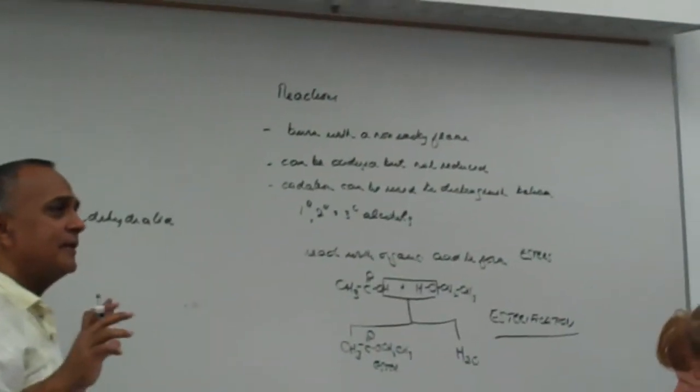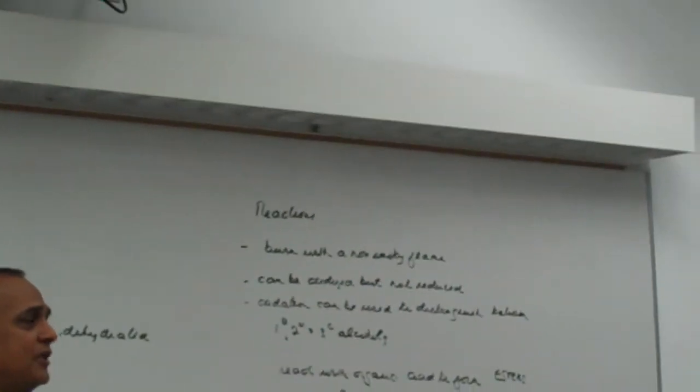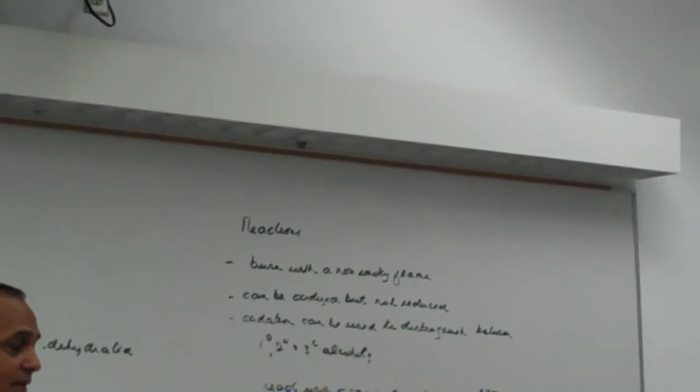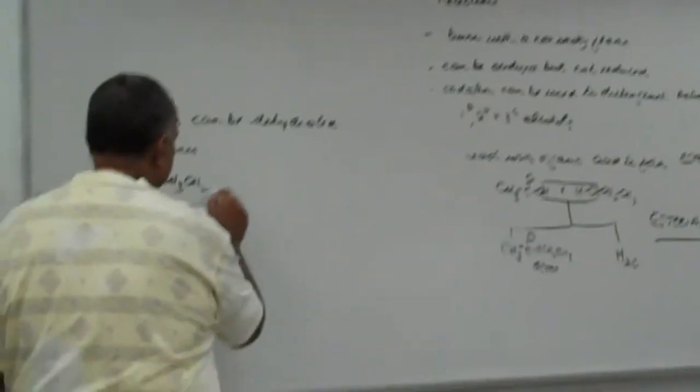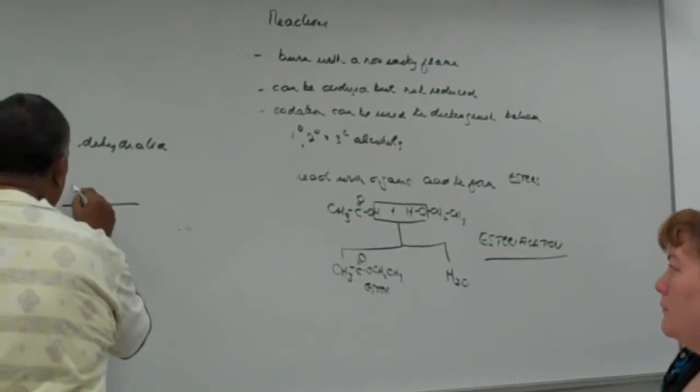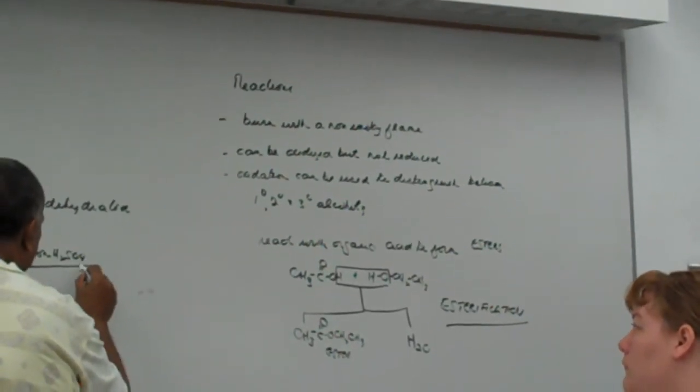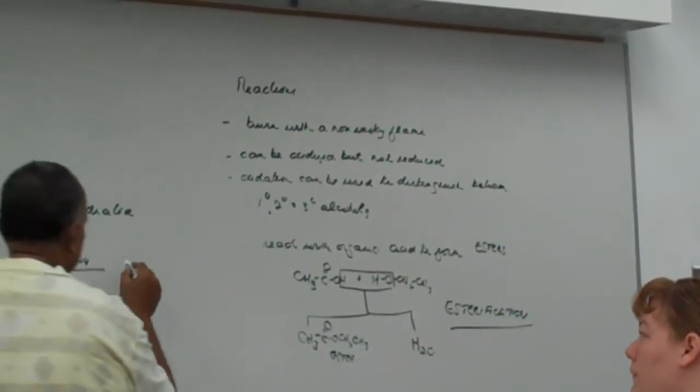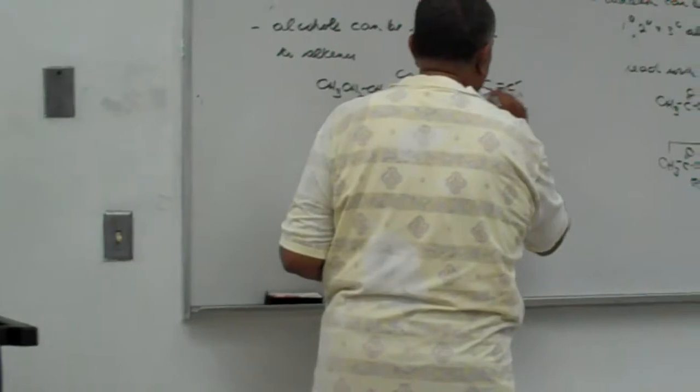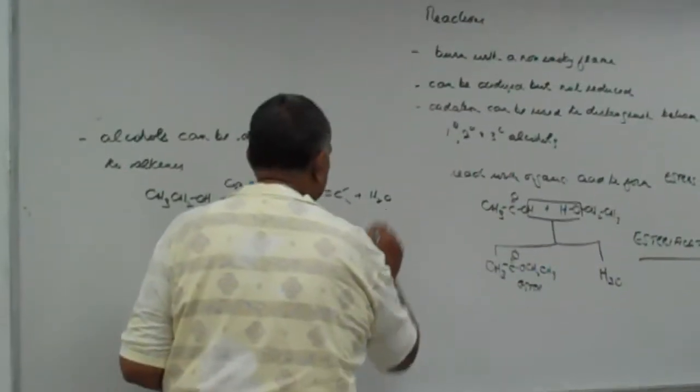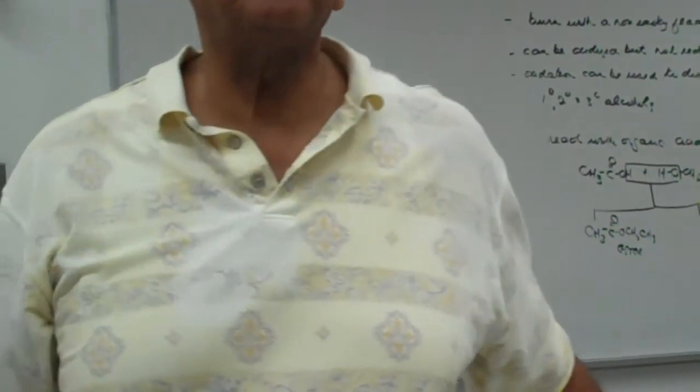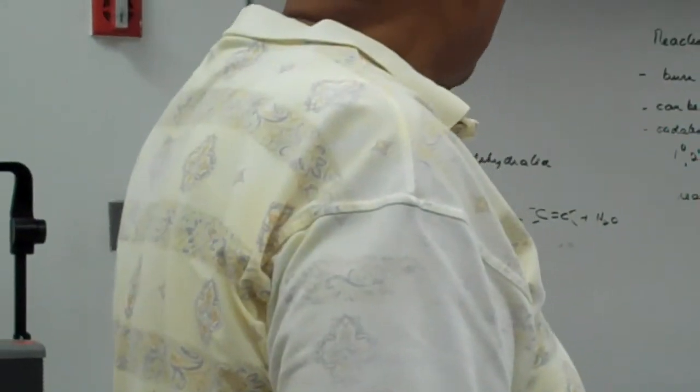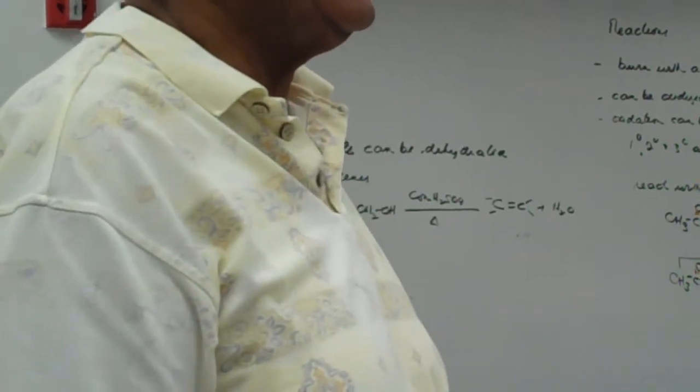If you remember, he said that hydration involves the addition of water. Dehydration involves the removal of water. So if I have ethanol, and I usually add some concentrated sulfuric acid to it, and I heat the mixture, it forms the alkene plus water. So alcohols can be dehydrated to form the alkene. If we start off with ethanol, we finish up with ethyl.